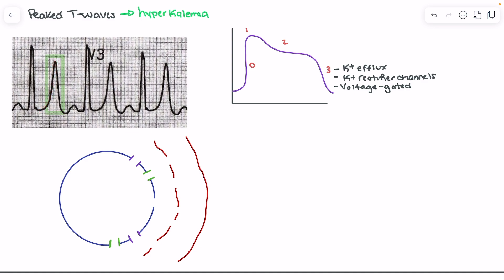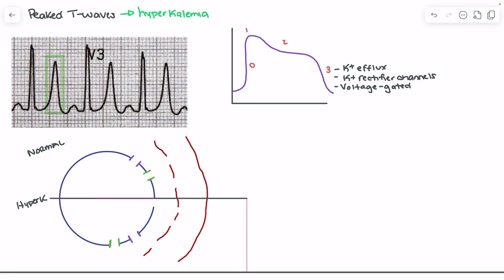When someone is experiencing hyperkalemia, the concentration of potassium outside the cell increases — we see a rise in serum potassium concentrations to the point where potassium outside the cell can exceed that inside. We'll draw normal versus hyperkalemia: in the normal cell, potassium is the major intracellular ion, with higher concentrations inside versus outside.